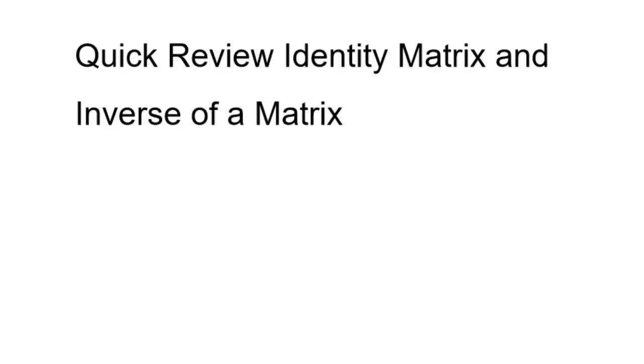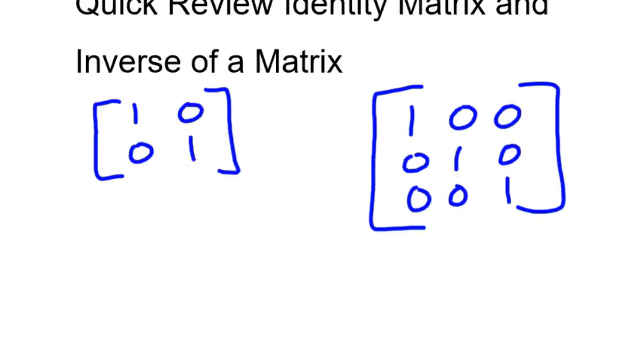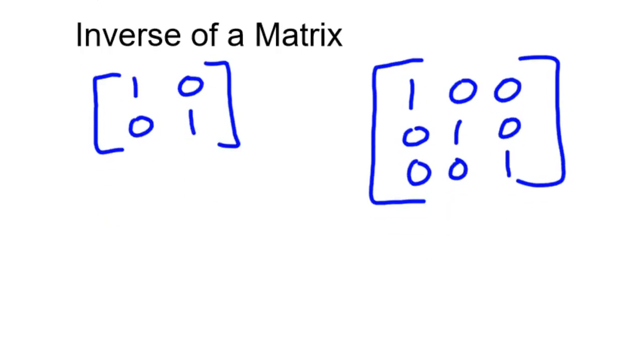Alright, a quick review. The identity matrix. If you've never seen some of this, you might take a look at identity matrix and what that means. But 1, 0, 0, 1 is essentially like having a 1 in a 2 by 2 matrix. A 3 by 3 would be 1, 0, 0, you know, here's the identity matrix for a 3 by 3. It's a diagonal length of 1's with everything else being a 0.